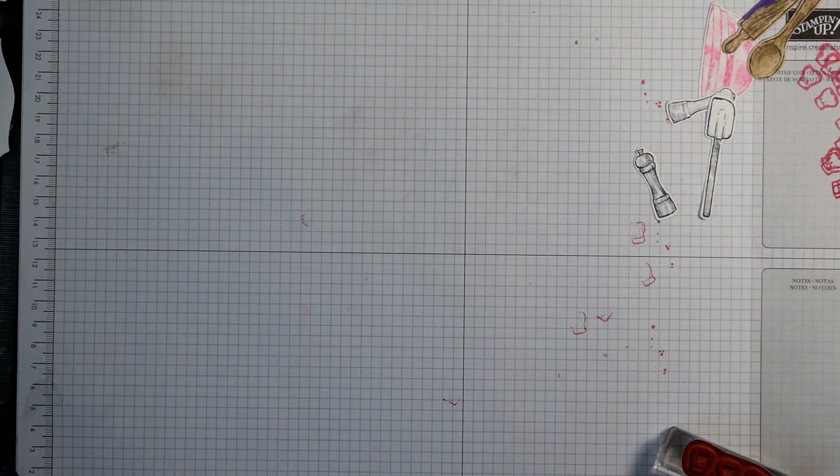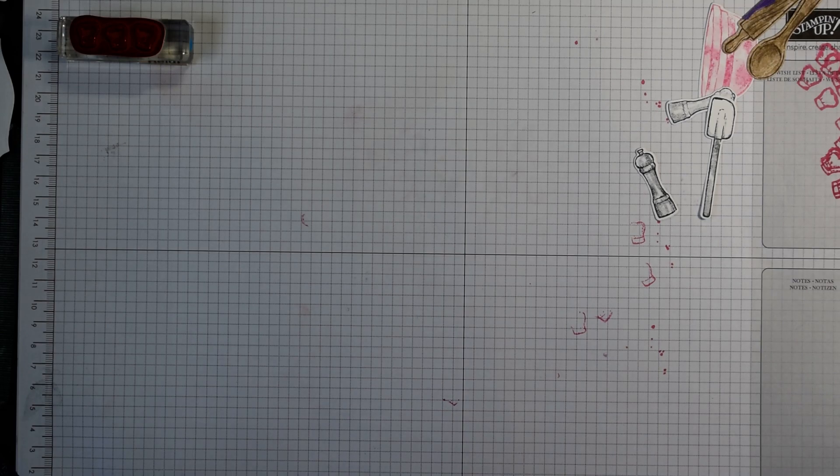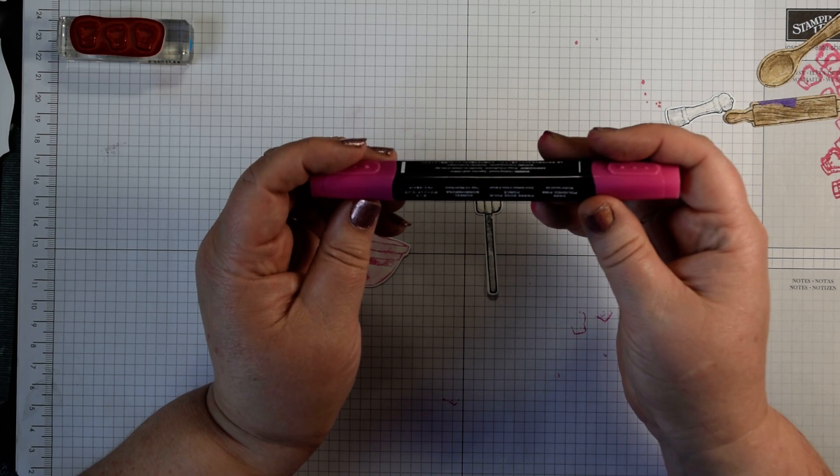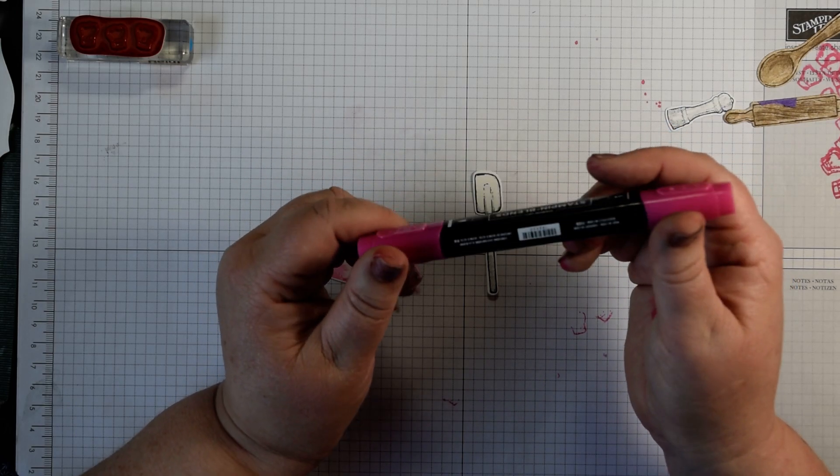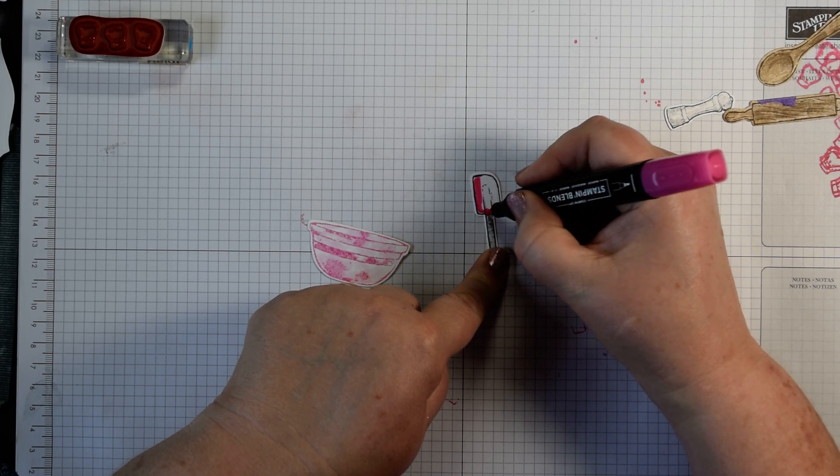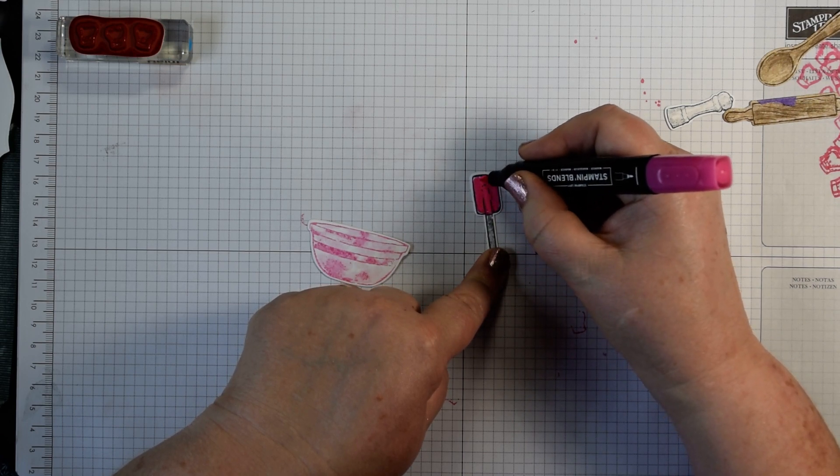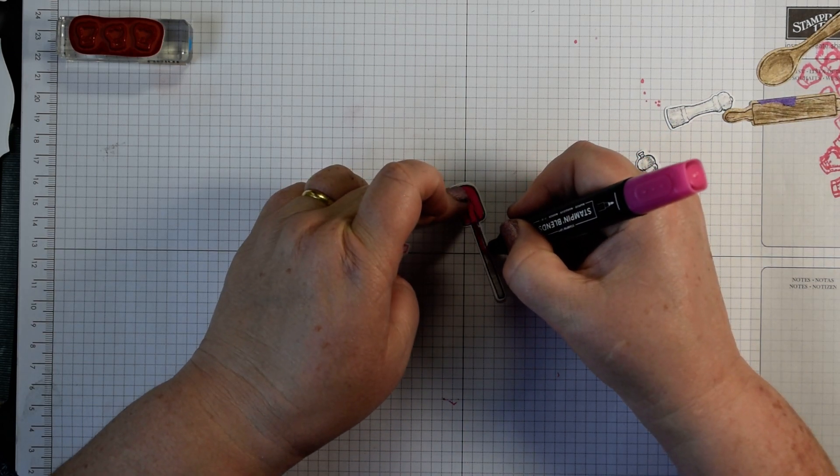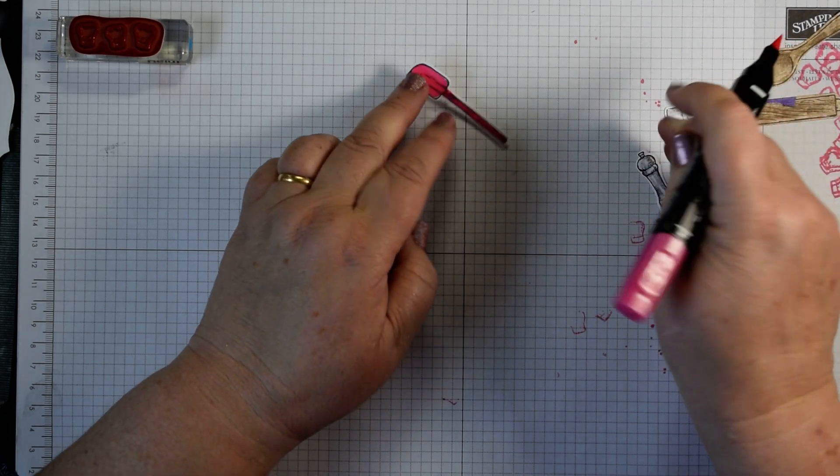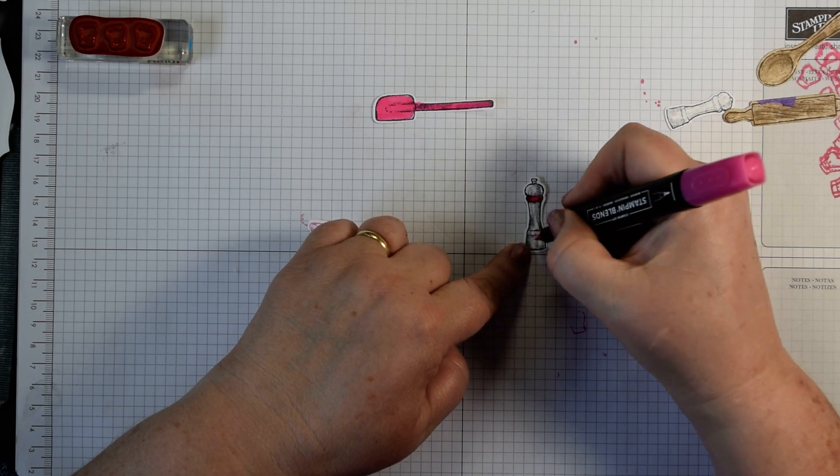There we go, just add a bit of interest and I would usually stamp that on my envelope as well. Pop that to one side. Now we want to start creating our sort of 3D effect with our bowl and do our coloring. I've got polished pink and this is just my single dark polished pink marker and I'm just going to color those in.